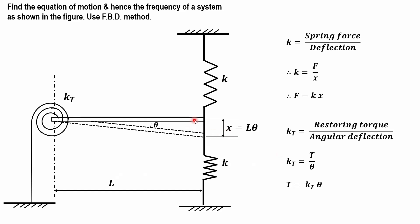If we give a displacement to the rod in the downward direction, suppose it is displaced by an angle theta, and if this length is l, then the small distance by which it is displaced is l·theta. This is an important point: when the rod is displaced in the downward direction, one spring will get compressed and the other spring will get elongated. The restoring force for both springs will be in the upward direction, trying to restore to the original position.